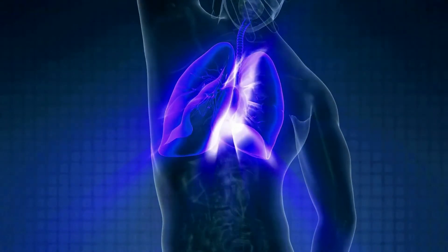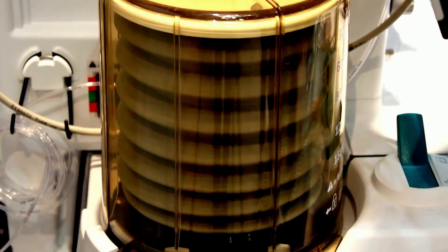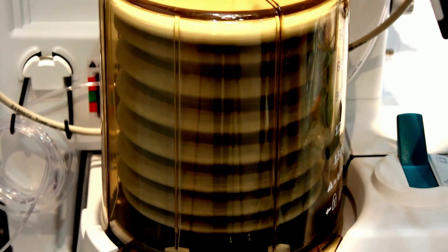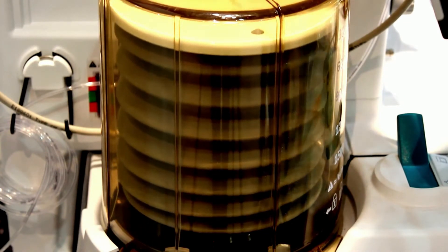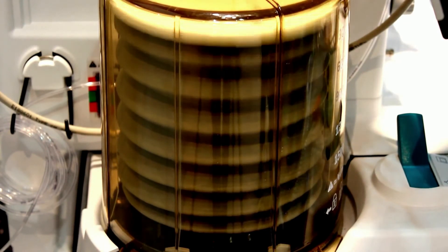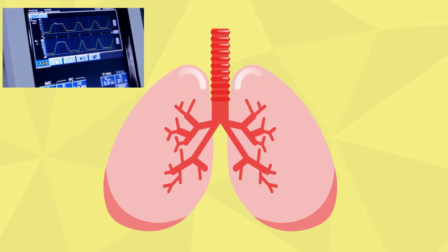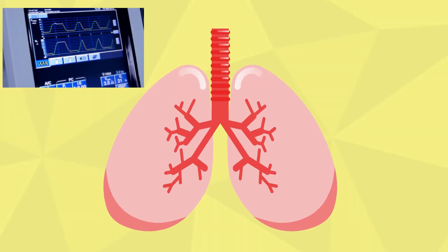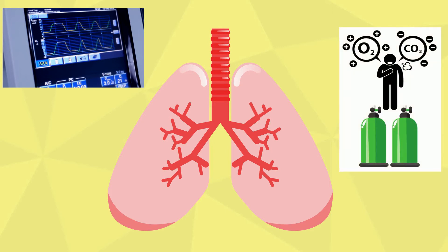Once the breathing tube position is verified, the tube is hooked to a mechanical ventilator, a machine that will provide breaths to the person intubated. The ventilator will be adjusted by trained professionals to ensure it provides enough amount of air movement to prevent any injury to the lungs and maintain oxygen and carbon dioxide at appropriate levels for a particular patient.